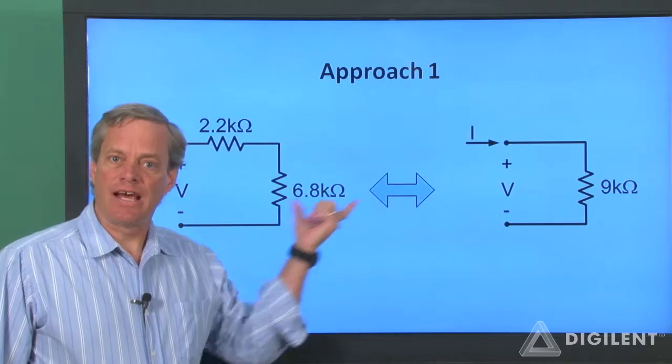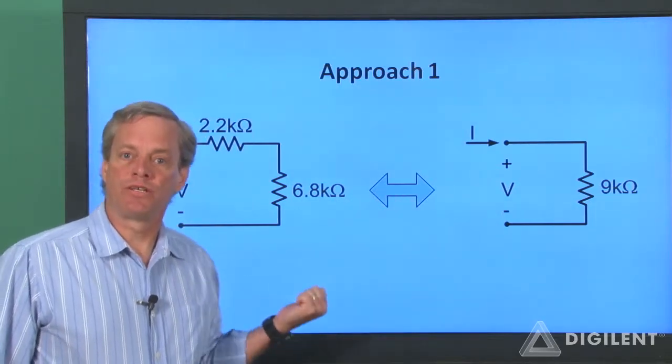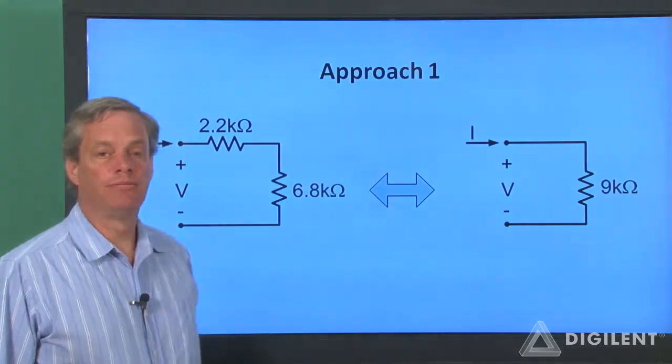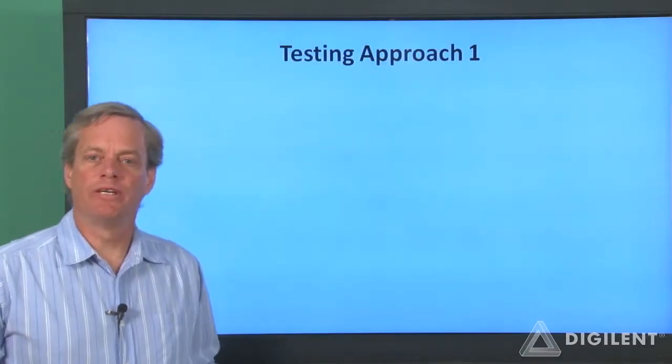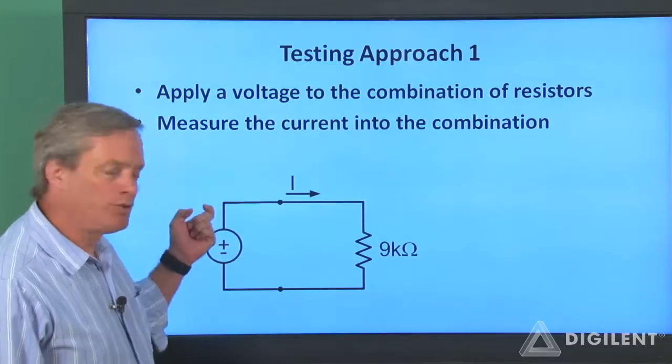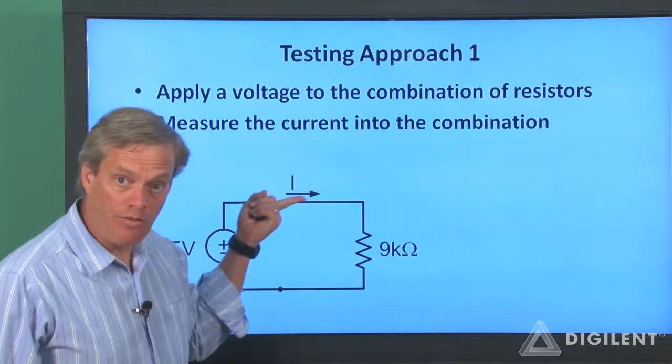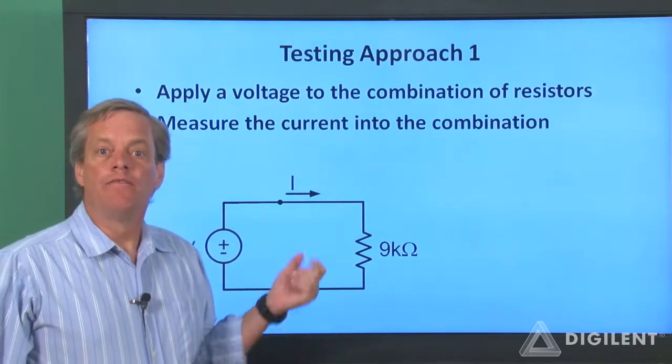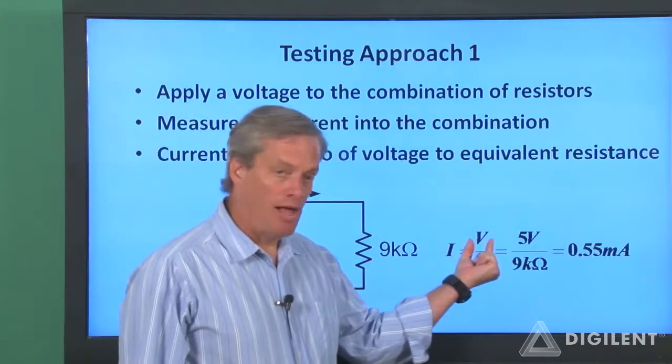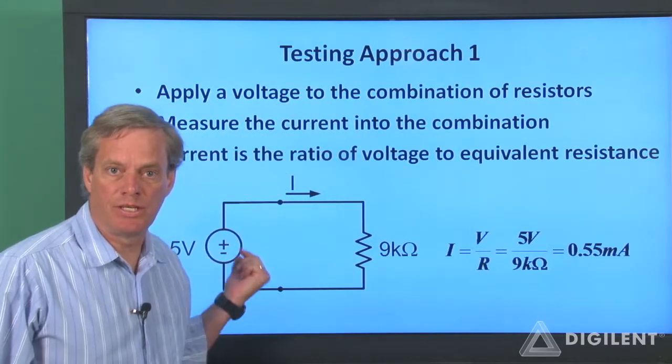But how can we be sure that this actually works? Being suspicious engineers, we'll want to test our circuit to make sure it does what we want. There are several ways that we can test our conclusion. The first way I'm going to use is apply a voltage across the combination of resistors and measure the current through the resistors. This current should be the applied voltage divided by the equivalent resistance of the combination of resistors.